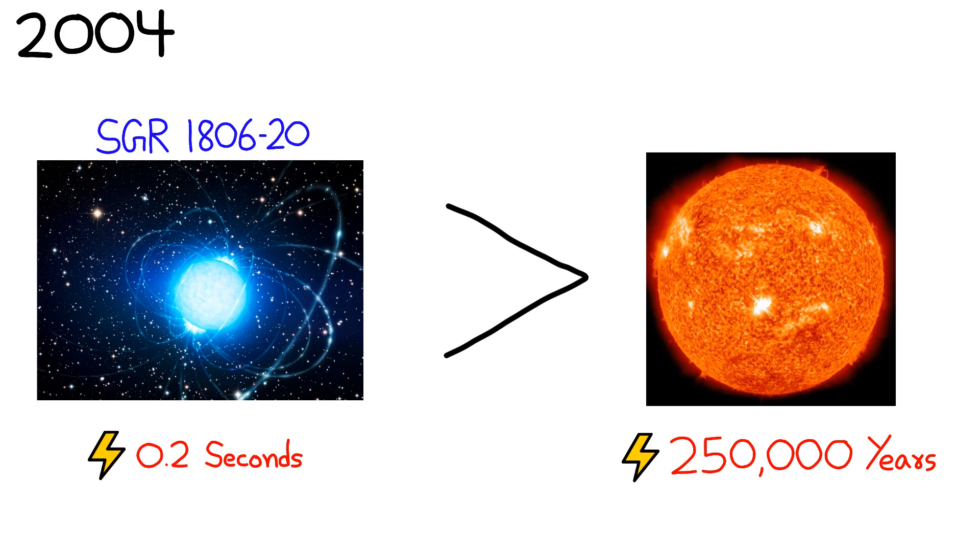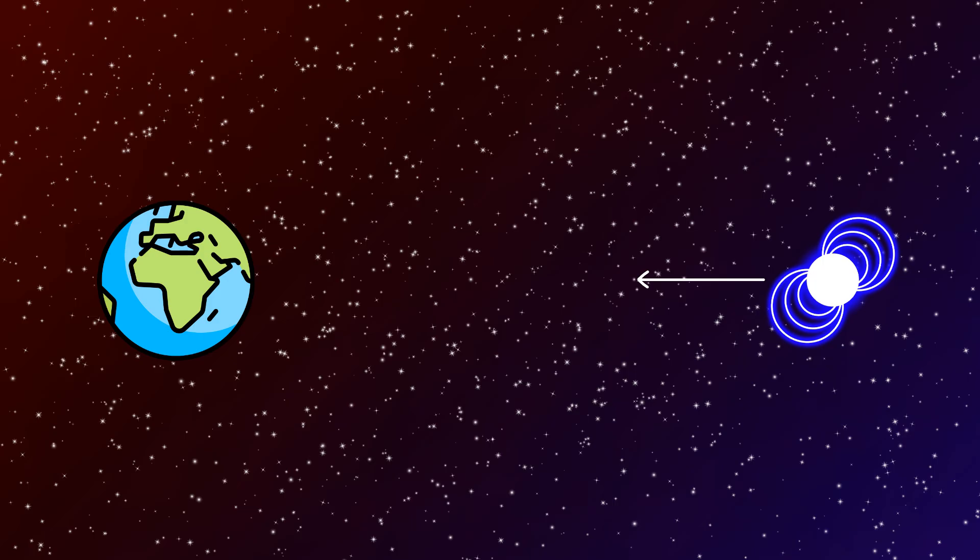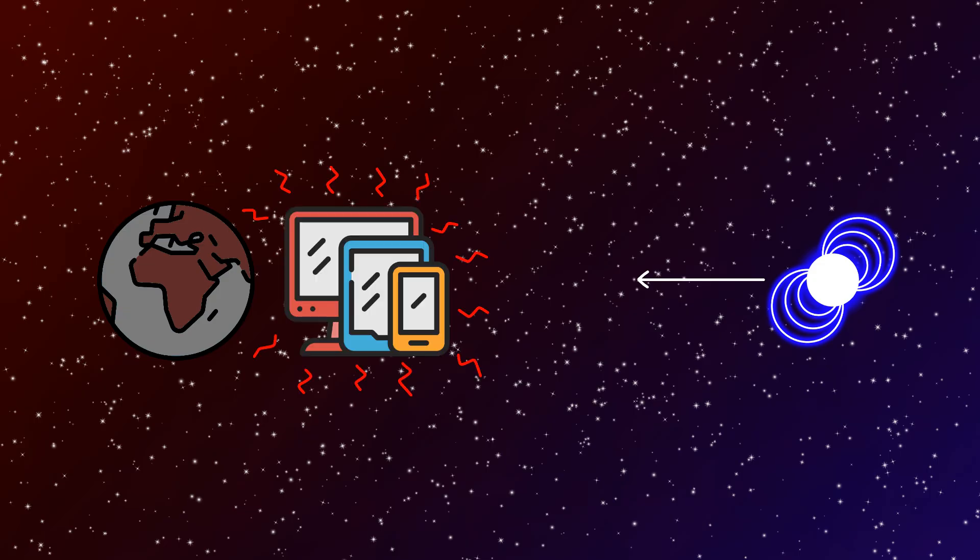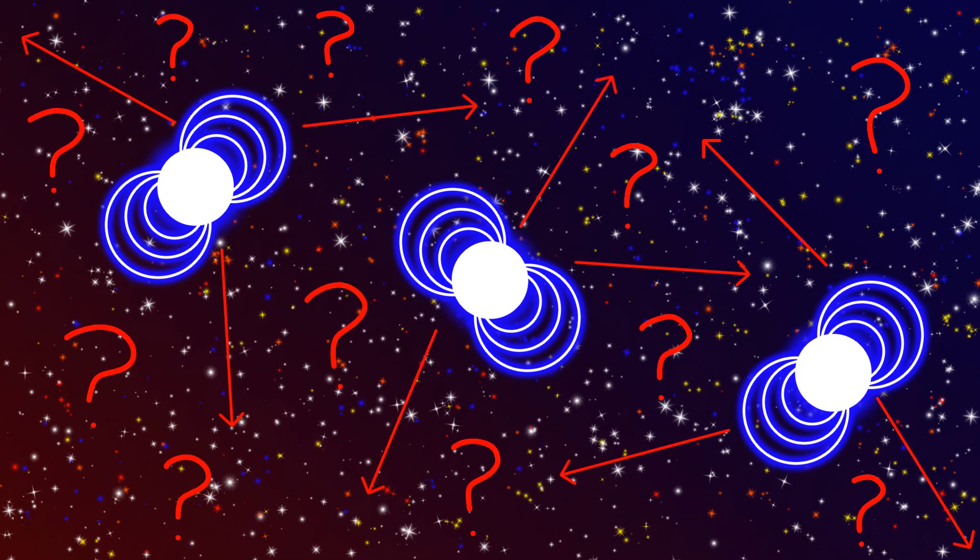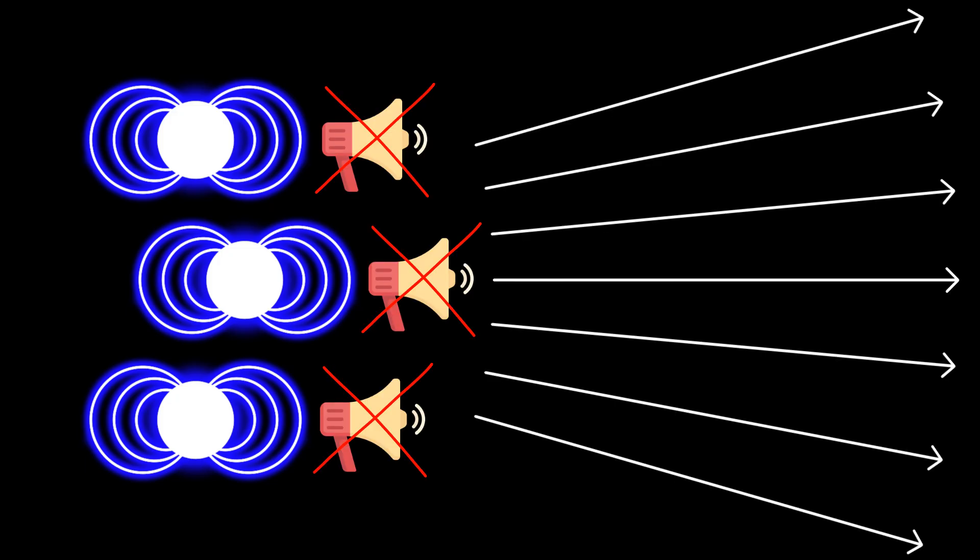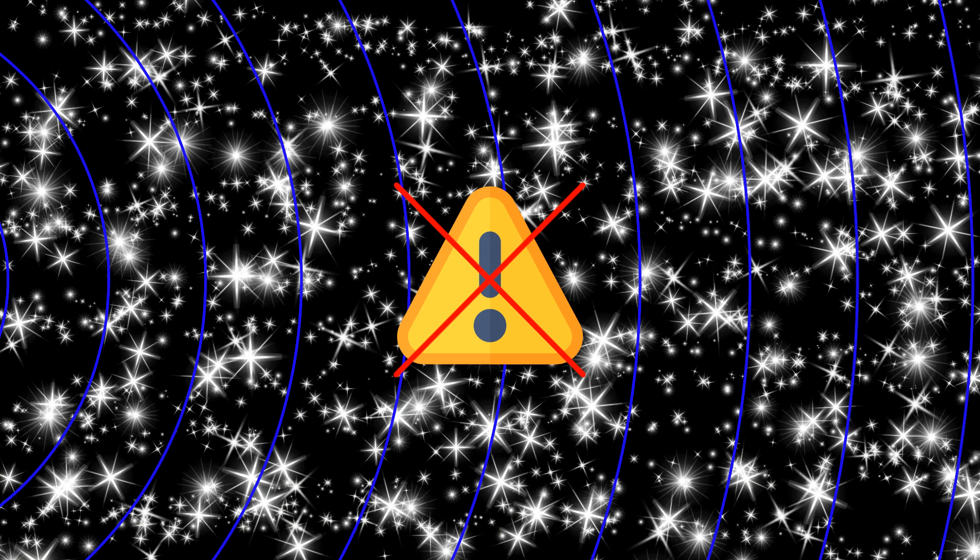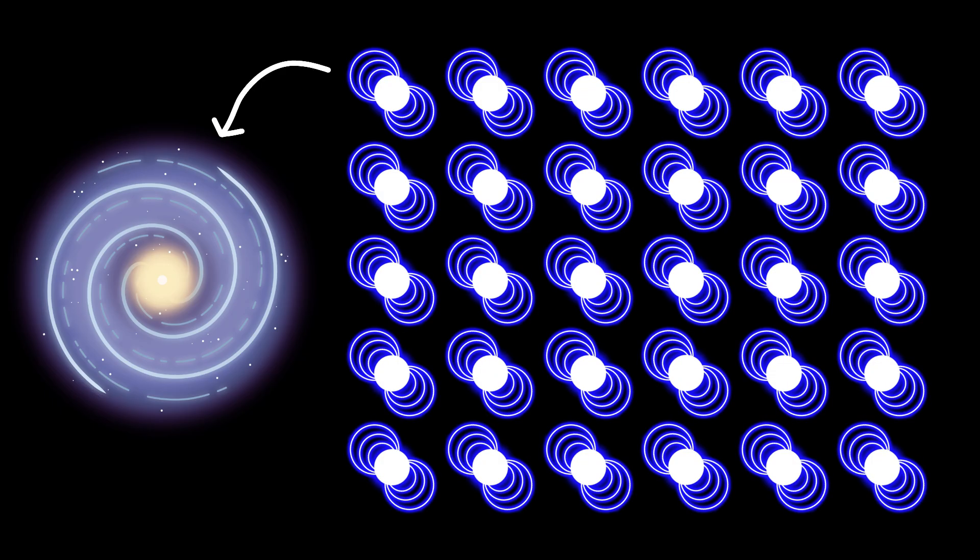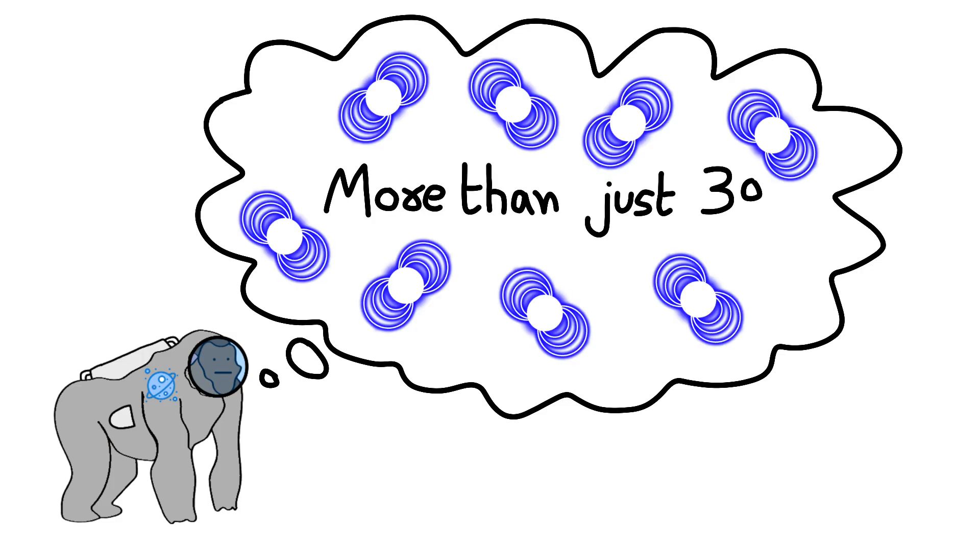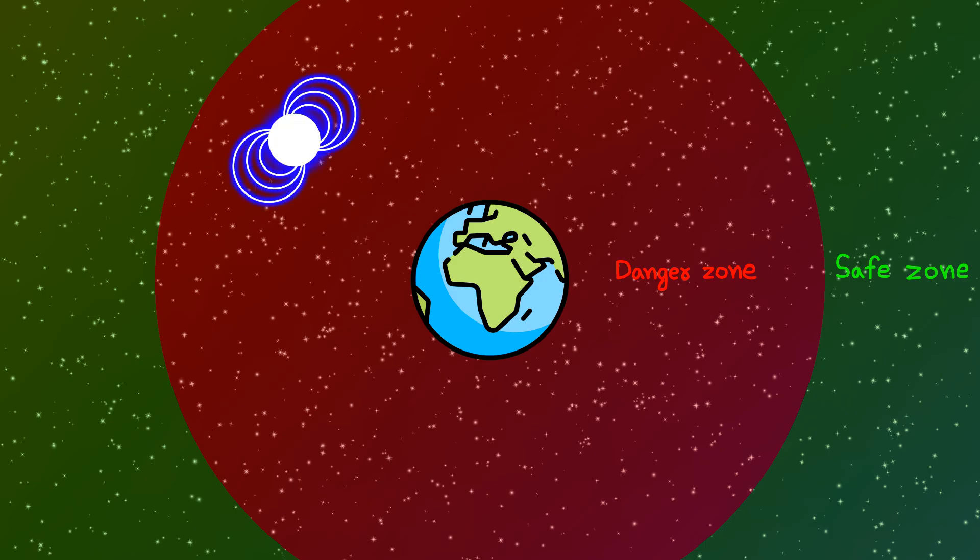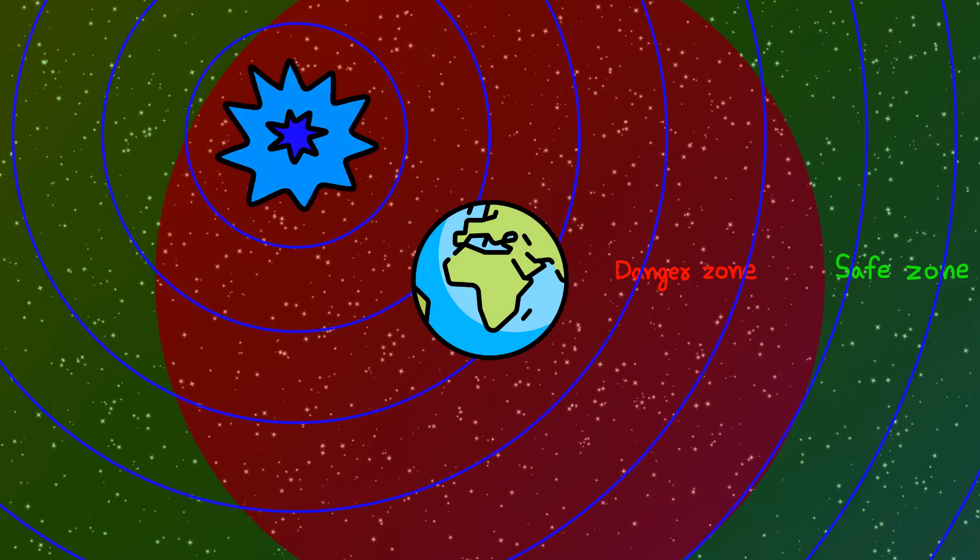In 2004, a magnetar called SGR 1806-20 released more energy in 0.2 seconds than the Sun emits in 250,000 years. If it had been a few light years closer, it could have devastated Earth's atmosphere and fried every electronic device on the planet. What makes magnetars the ultimate cosmic nightmare is their unpredictability. They don't announce themselves with visible light or heat. They just suddenly explode with invisible radiation that could sterilize entire star systems without warning. Currently, about 30 known magnetars are lurking in the galaxy, most thousands of light years away. But given how difficult they are to detect, astronomers believe many more are hiding throughout the Milky Way. If even one activated within dangerous range, it could become an invisible bomb in the sky, detonating without warning and ending civilization instantly.